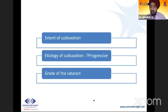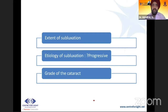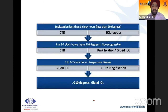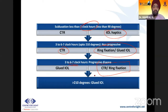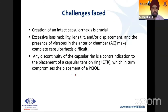The extent and etiology of subluxation are very important. A traumatic subluxation does not tend to progress, but in Marfan's you can be 100% sure it will progress. You must also look at the grade of cataract. For less than three clock hours, CTR or IOL haptics may suffice. Three to six hours needs CTR and ring fixation or glued IOL. More than that requires ring fixation to sclera or glued IOL. More than 180 to 200 degrees requires glued IOL or Yamane technique.